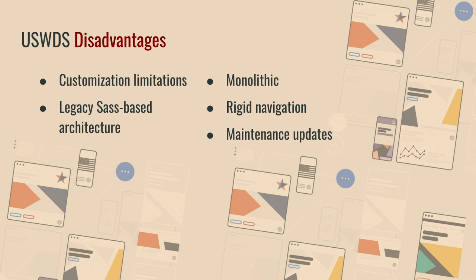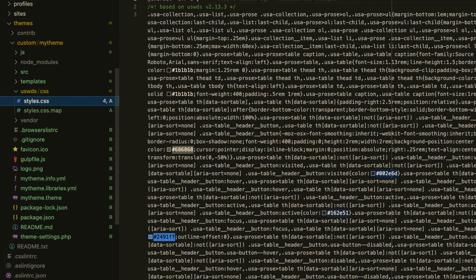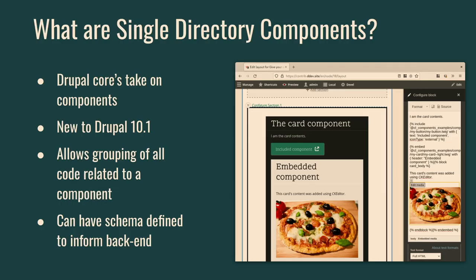But it's not all roses — there are some issues with it. It has limitations for customization. It has a legacy Sass-based architecture that dates from the Internet Explorer days. The assets it generates are monolithic — very large CSS files and JavaScript files. It has a rigid navigation system with three different variants, but you can only do certain things with them out of the box. This is a big screenshot of their compiled CSS file — it's about half a megabyte — and that's one of the issues we strive to fix within single directory components.